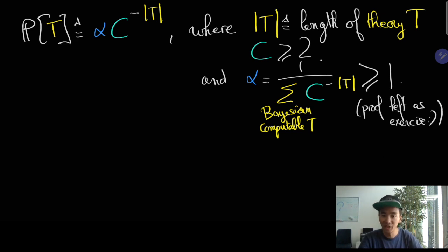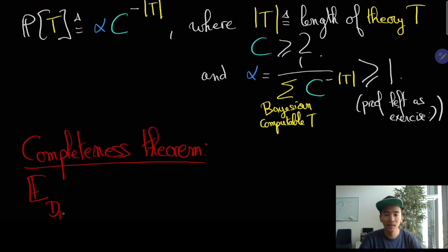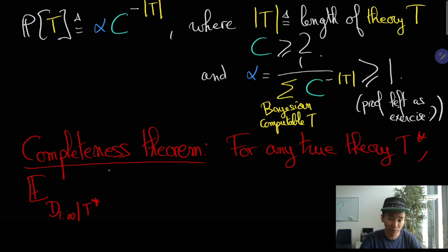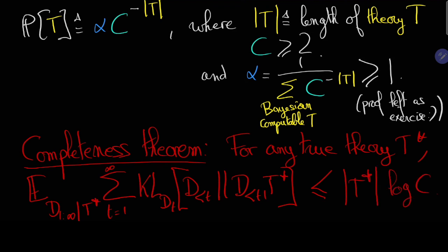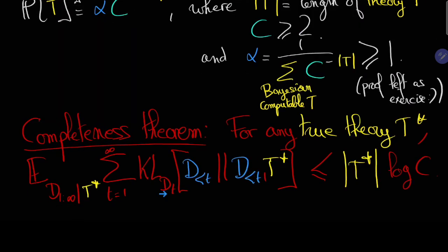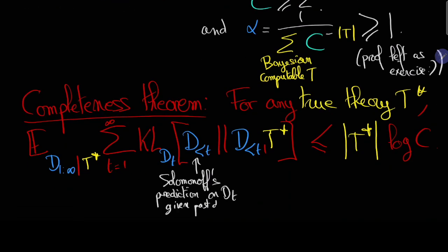Then applying Bayes rule we make predictions, and what the completeness theorem says is that the sum of all errors of predictions using the KL divergence to measure the error of prediction is going to be at most the so-called Solomonoff complexity of the truth theory T star.